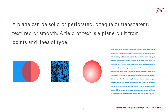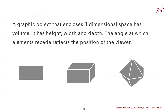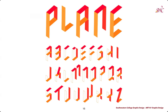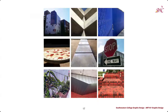We also think about the field of text as a plane built from different points and lines of text that creates some density on the page. A graphic object that encloses a three-dimensional space has volume — some sort of height, width, and depth. The angle at which these elements recede reflects the position to the viewer. We can see that being used through different planes that create a sense of space for this typographical letter alphabet. Planes can be found in our everyday world, within bricks in the sidewalk, different buildings, stop signs, or parts of the street infrastructure.